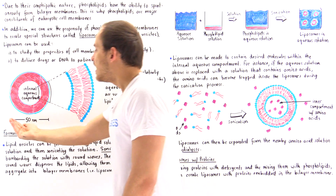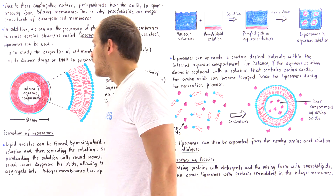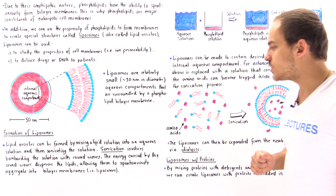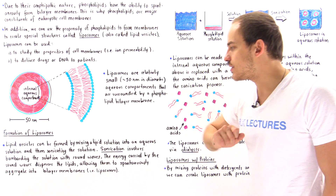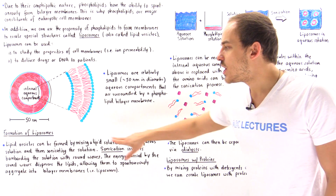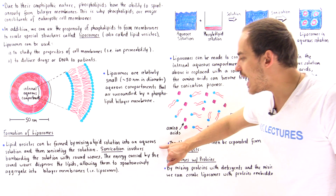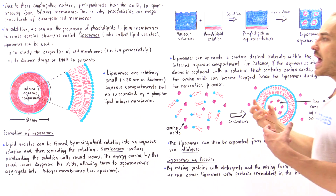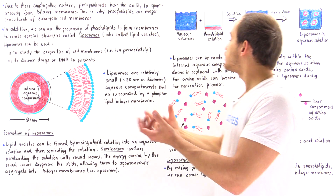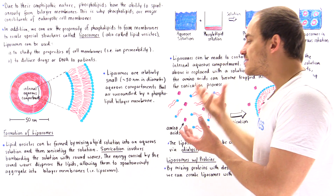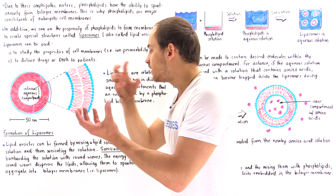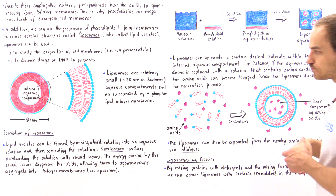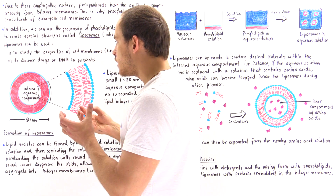Lipid vesicles are formed by mixing a lipid solution into an aqueous solution and then sonicating it. The energy carried within the sound waves increases the kinetic energy of the phospholipids, dispersing them, and that allows them to collectively aggregate and form the bilayer membrane — producing the liposomes of interest.